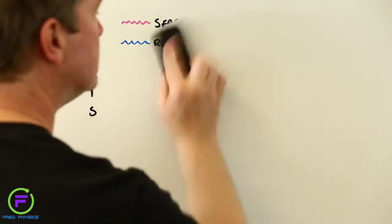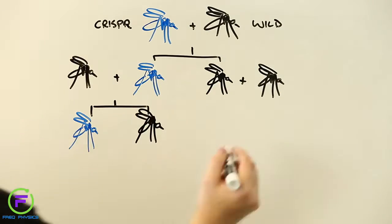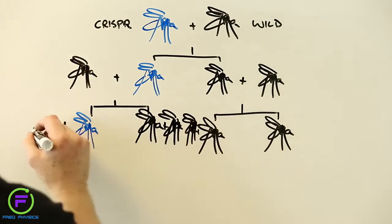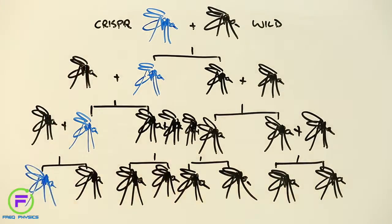Unfortunately, on its own, CRISPR isn't so effective. Every time a CRISPR mosquito mates with a wild one, its genetically modified DNA is diluted down, meaning that some of its offspring will still be able to carry the malaria parasite.